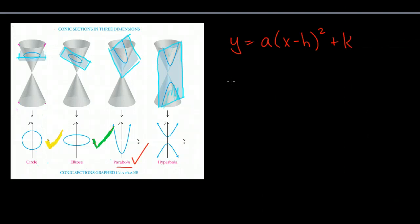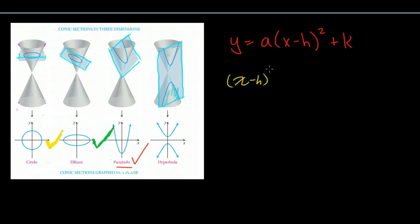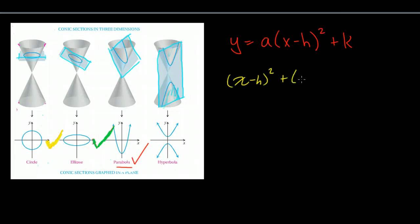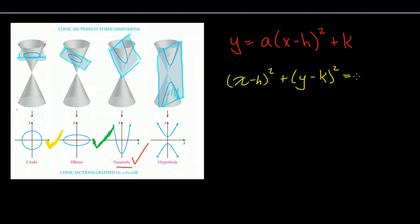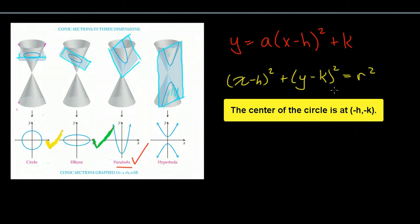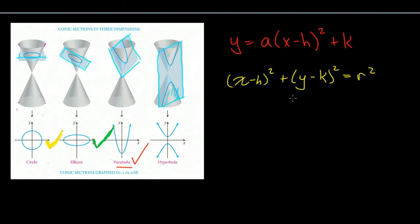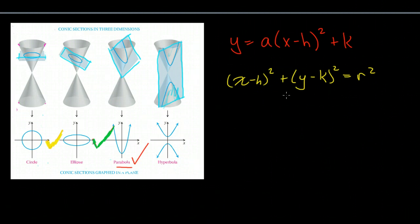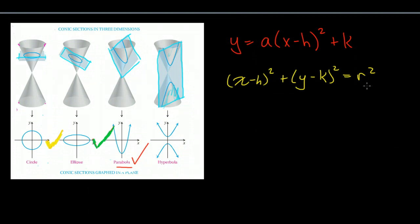Our circle in standard form is the quantity x minus h squared plus y minus k squared, and that's equal to the square of a radius. So again, h is a horizontal shifter, k is a vertical shifter for that center point, and that will tell you where the new origin for your circle is, and r would be the radius.